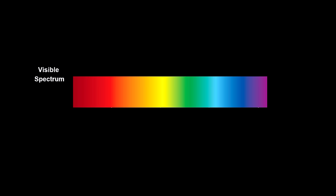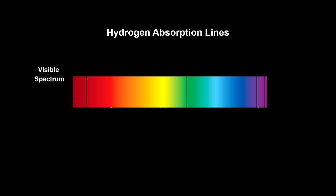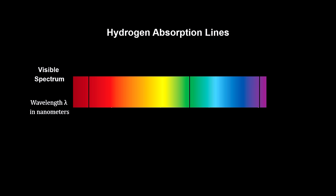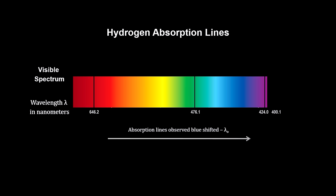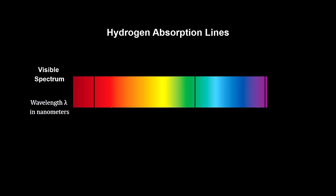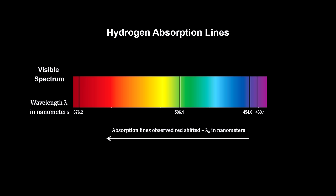The same effect works for light. Here we have the visible spectrum from a star. Hydrogen in the star's atmosphere creates absorption lines with a unique pattern. Here's the pattern for a star at rest with respect to the observer. Light from an approaching star has its wavelengths shortened — we see that the lines shift to the blue; they are said to be blue-shifted. Light from a receding star has its wavelengths lengthened — we see the lines shift to the red; they are said to be red-shifted.